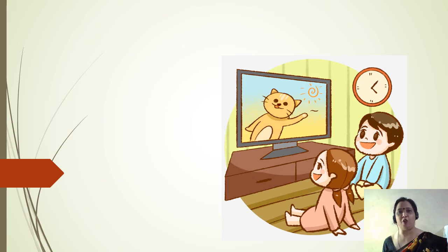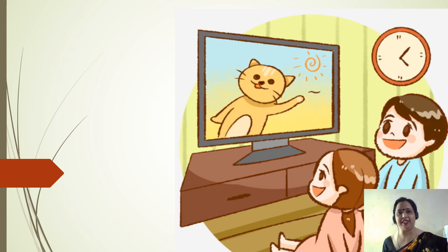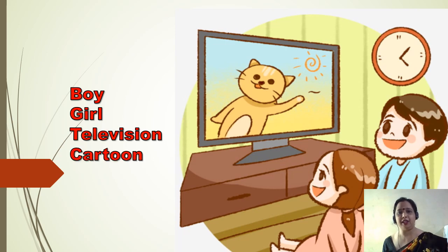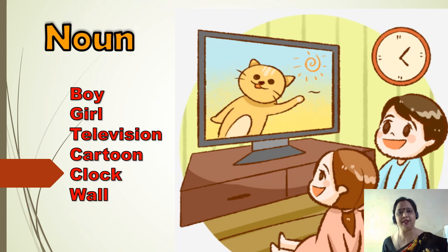Children, what do you see in the picture? We see a boy, a girl, television, cartoon, clock — and the clock is on the wall. As we know, whatever we see or feel around ourselves is always known by a name. Hence, we can say that all naming words are nouns.